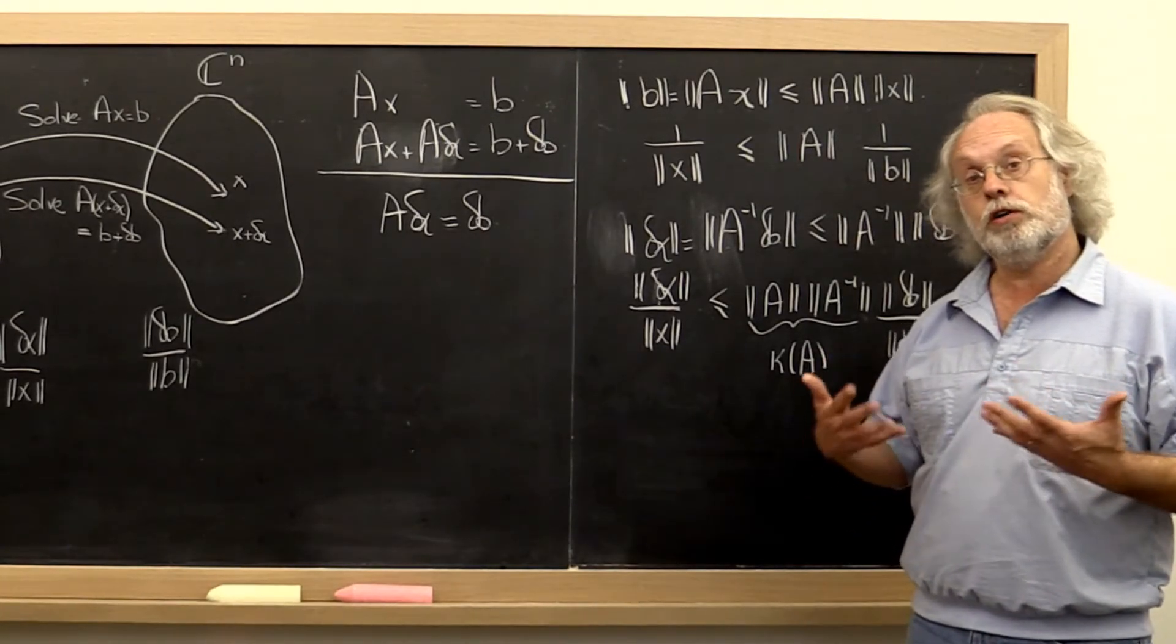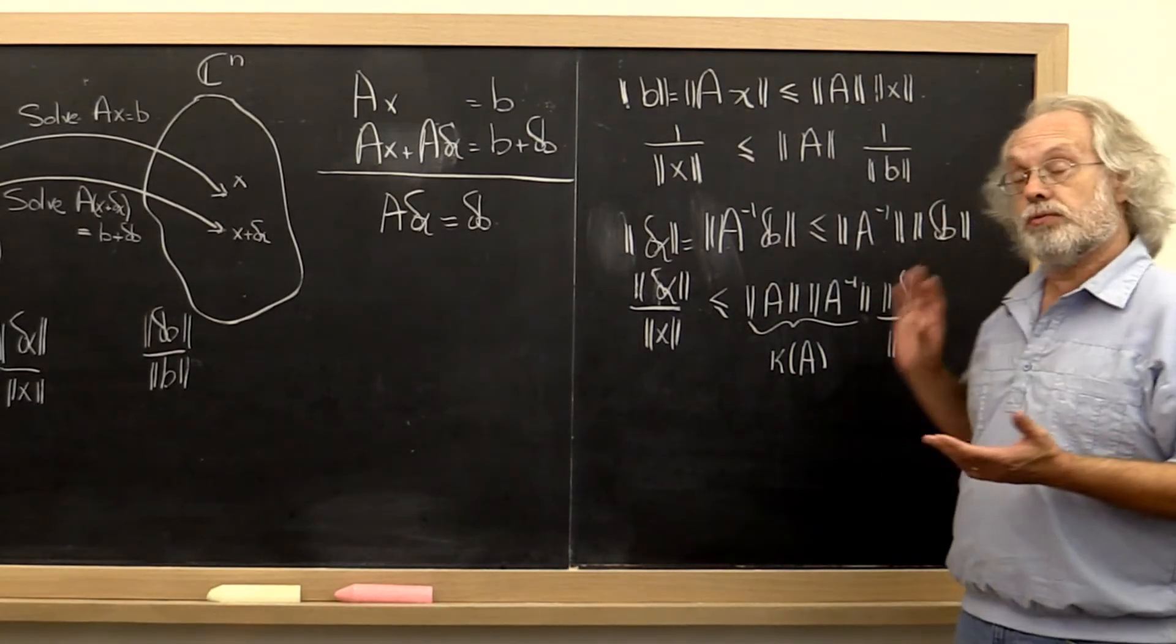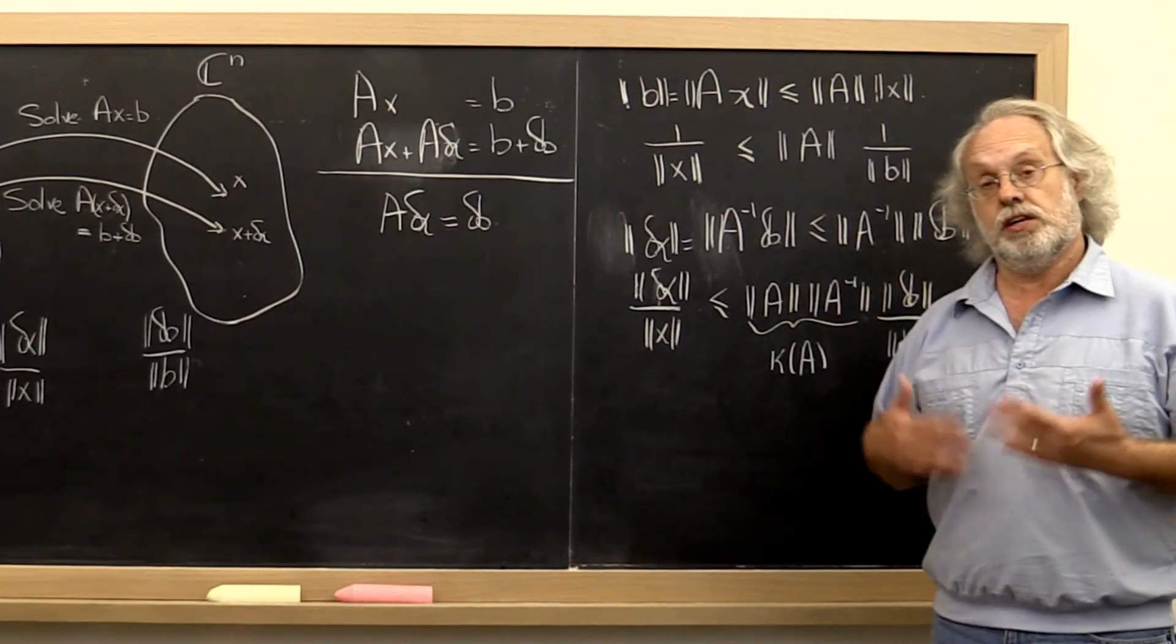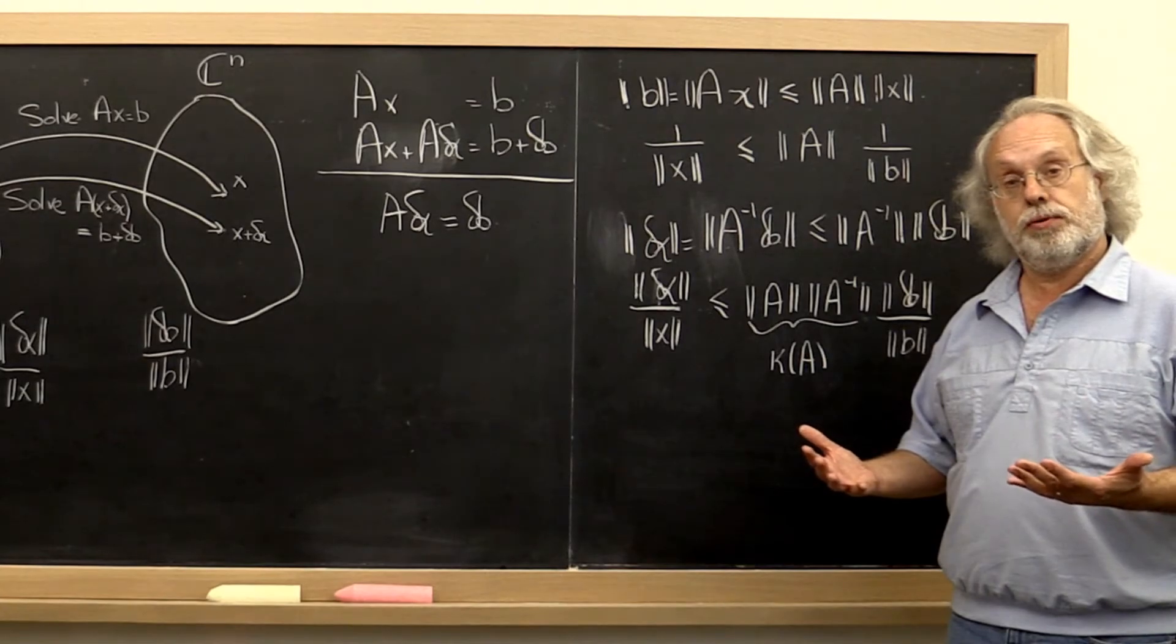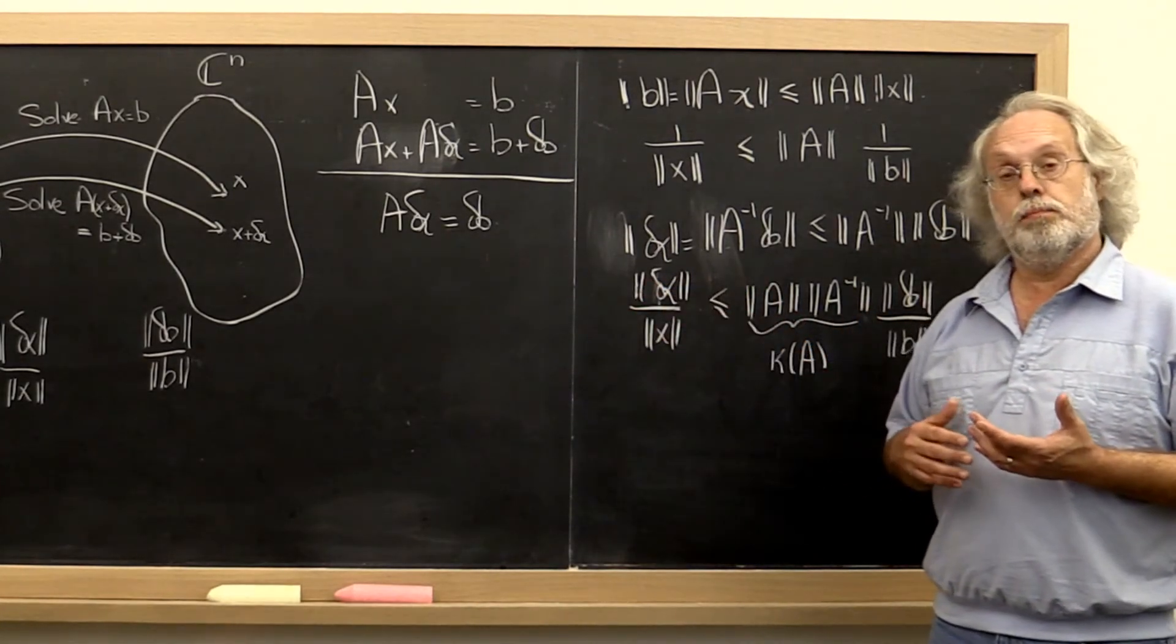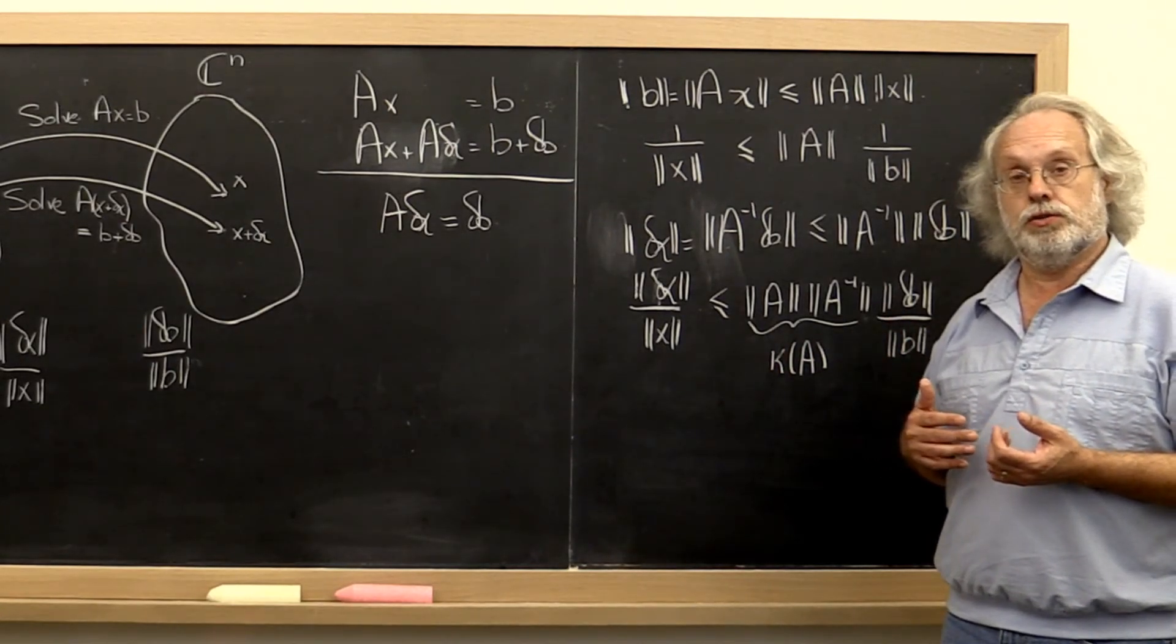So we learn from this that it's important to understand how much accuracy you have in your data, what the condition number is of the matrix that comes up, and then to understand how that may translate into accuracy in your solution vector.